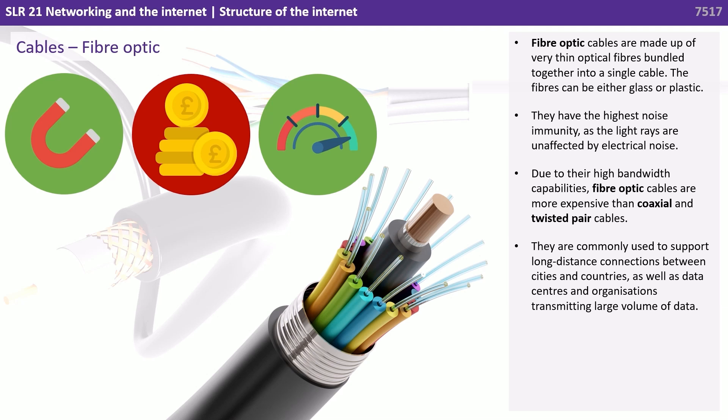Fibre optic cables are made up of very thin optical fibre bundles in a single cable. The fibres can be either glass or plastic. They have the highest noise immunity, as the light rays are unaffected by electrical noise. Due to their high bandwidth capabilities, fibre optic cables are more expensive than both coaxial and twisted pair. They're commonly used to support long distance connections between cities and countries, as well as data centres and organisations transmitting large volumes of data.